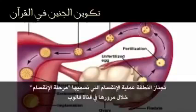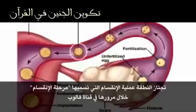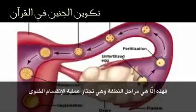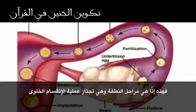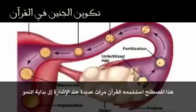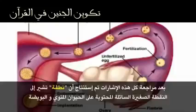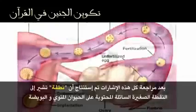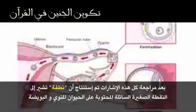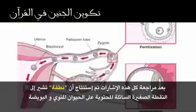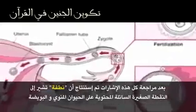The nutfa undergoes division, which we call cleavage, as it passes down the uterine tube. These are the stages of the nutfa as it undergoes cell division. This term is used several times in the Quran when referring to the beginning of development. After examining all these references, it is concluded that nutfa refers to the small drop of fluid containing the sperm and the ovum.